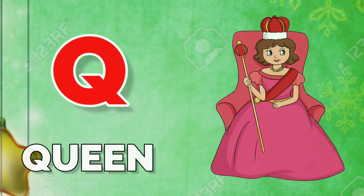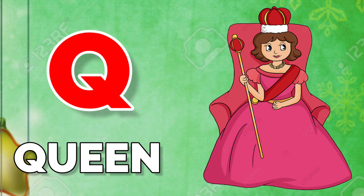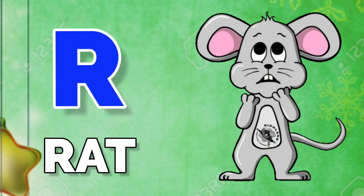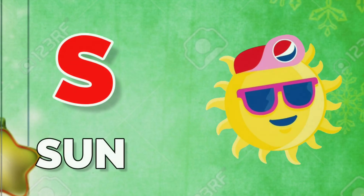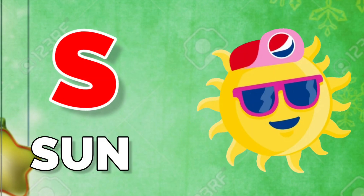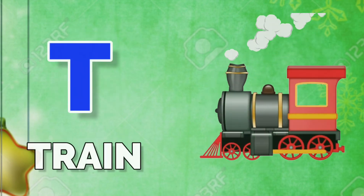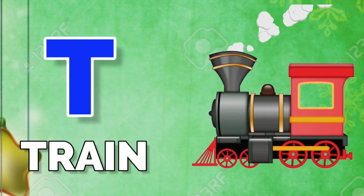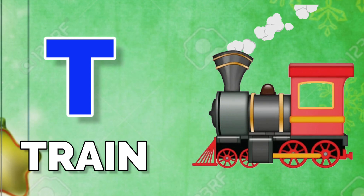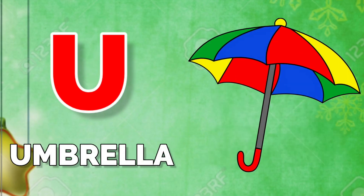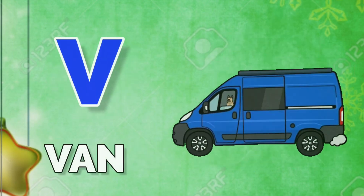U for queen, R for red, S for person, E for friend, U for umbrella, E for branch.